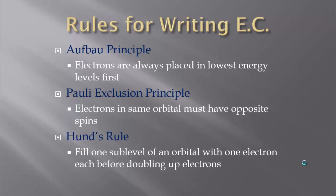Finally, we have Hund's Rule. We're going to fill one sub-level of an orbital with one electron each before we double up electrons. In P, there are three orbitals, so we want to make sure we have one in each before we double up. Hund's Rule is basically the empty bus seat rule — on a bus full of strangers, everyone sits in their own seat first to spread out. Once there are no empty seats, they have to double up. So electrons fill one each first, then we start doubling up.